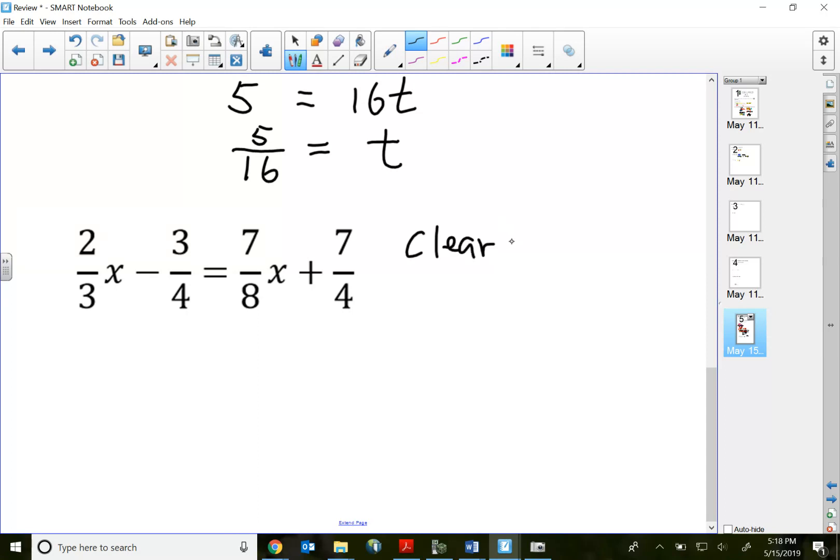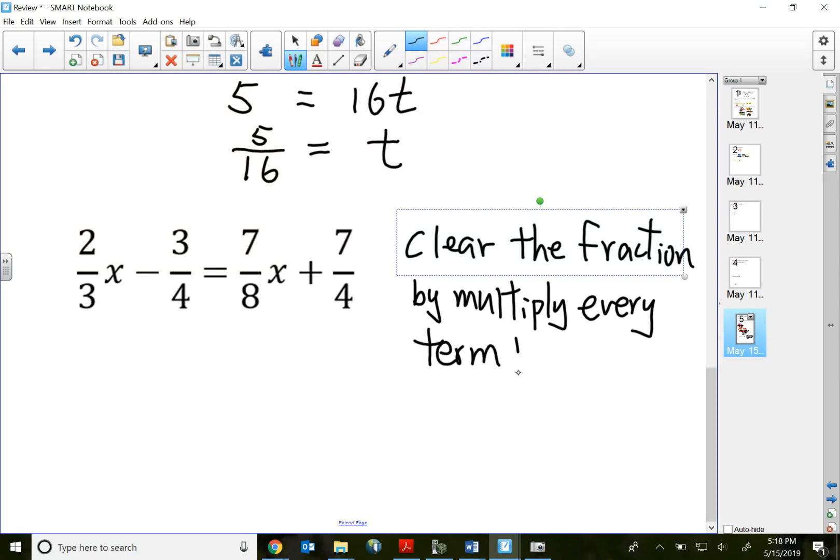We will clear the fraction by multiplying every term by the least common denominator. Just by looking at the denominators here, between 4 and 8, LCD's got to be 8. Between 8 and 3, they got to be 24.